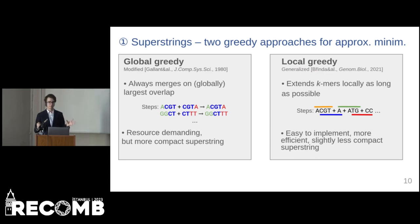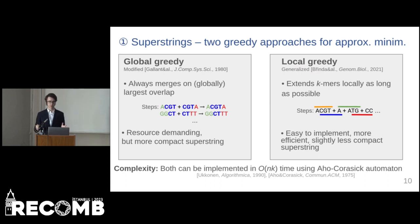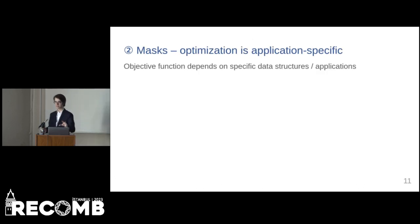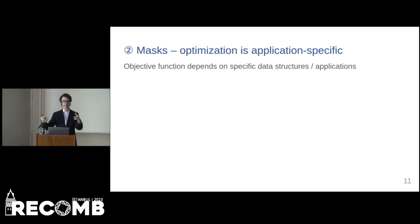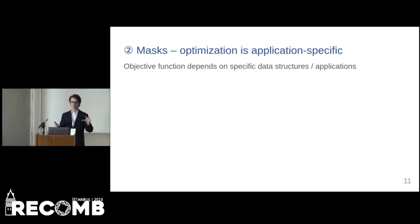Both algorithms can be implemented either using integer hashing of k-mers or using an Aho-Corasick automaton. And as we have seen, if we compute the superstring from the input k-mers, there may still be different masks for the superstring. Thus, in the second step we optimize the mask.